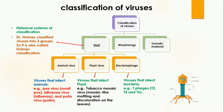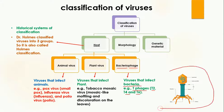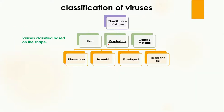The third classification on the basis of host is bacteriophage. Phage means virus and bacteria means bacteria, so this virus actually infects bacteria. You can imagine that a virus is such a small entity that it can infect bacteria. Examples of bacteriophages include T phages — T2, T4, and T6 — and this is the structure of that phage.